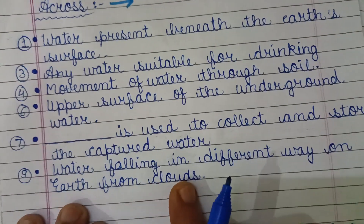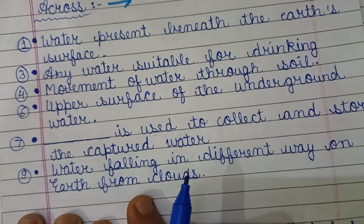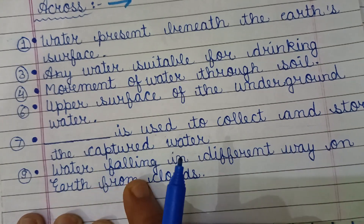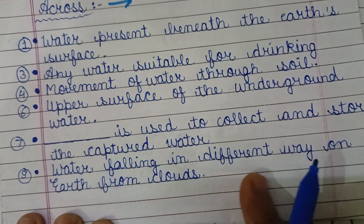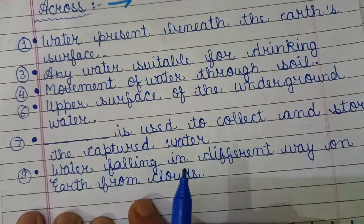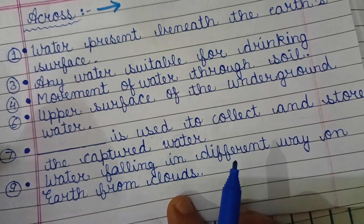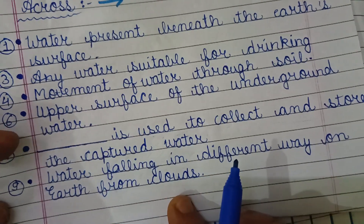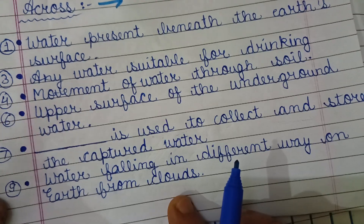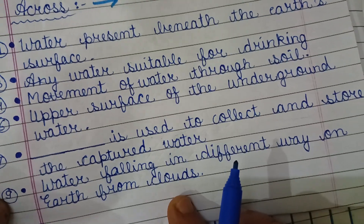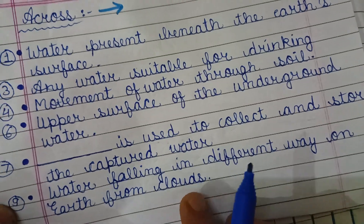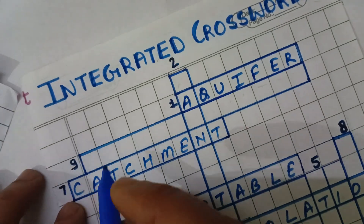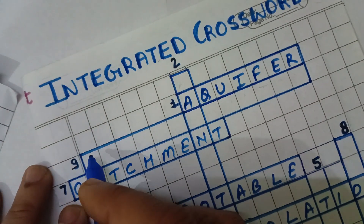Water falling in different ways on earth from clouds is known as precipitation. This is filled in 9 across — precipitation.